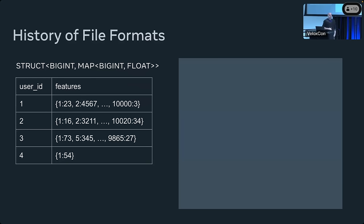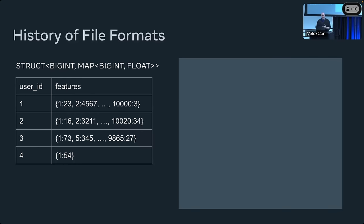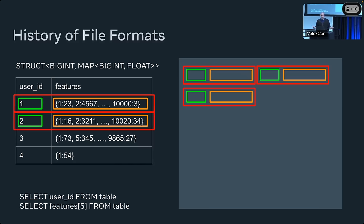Let's do a quick history lesson about file formats. On the left we have a table we want to write into a file. It's a very simple table — the schema is a struct with two columns. One is an integer column, and the other is a complex column: a map from integer to float, representing features where the integer is the feature ID and the float is the feature value. How can we represent this in a file? The first thing we can try is row format — take every row and put it one after the other.